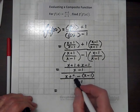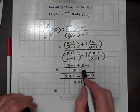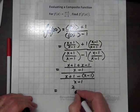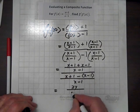We'll simplify. x plus x is 2x, and the ones add out. So we get 2x over x minus 1.